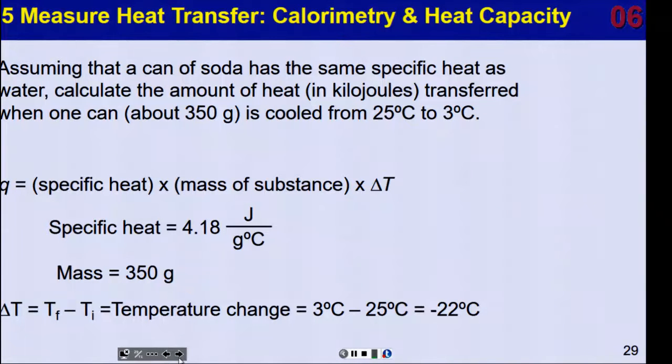So let's look at an example that uses heat, specific heat, and how we can put the calculation together. So if we assume we have a can of soda that has the same specific heat as water, and that's a decent assumption, we'll calculate the amount of heat and kilojoules as our preferred unit now, transferred when a can, which is essentially 350 grams, is cooled from 25 Celsius, that's a room temperature on a warmish day, to 3 degrees Celsius, that's like your refrigerator more or less.